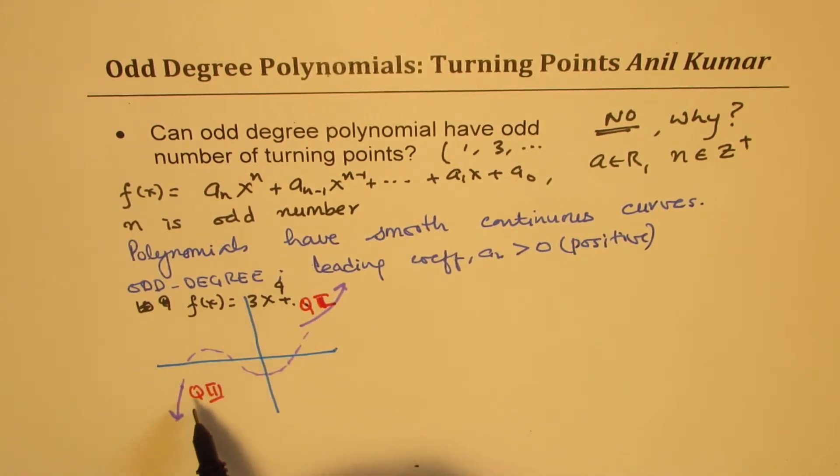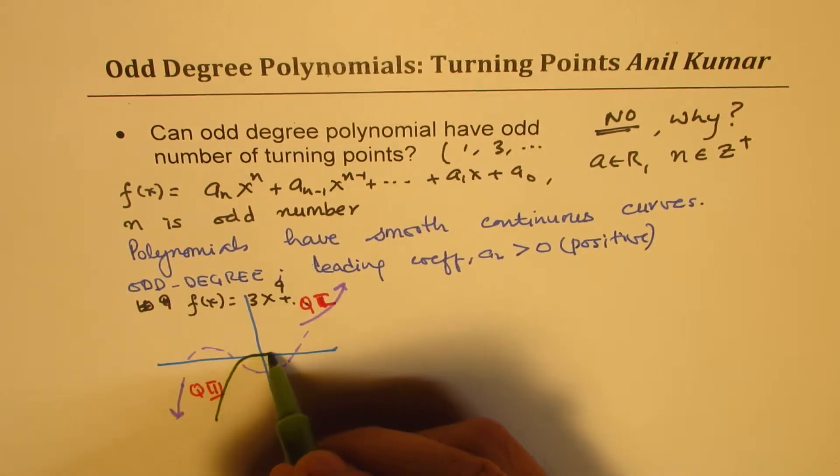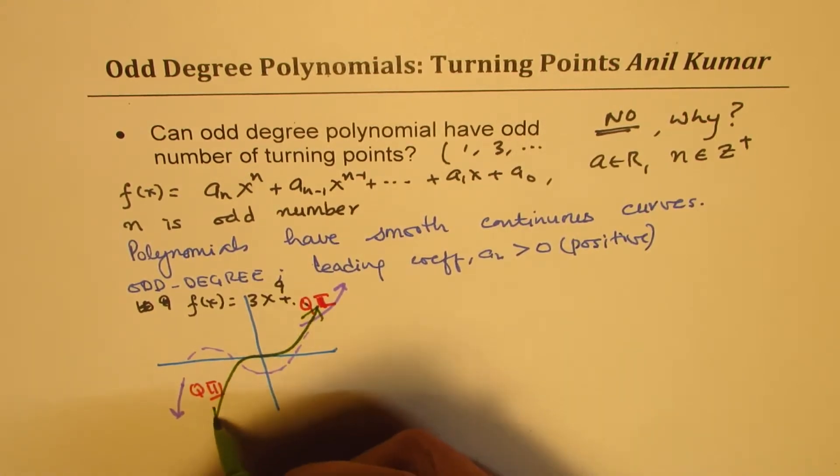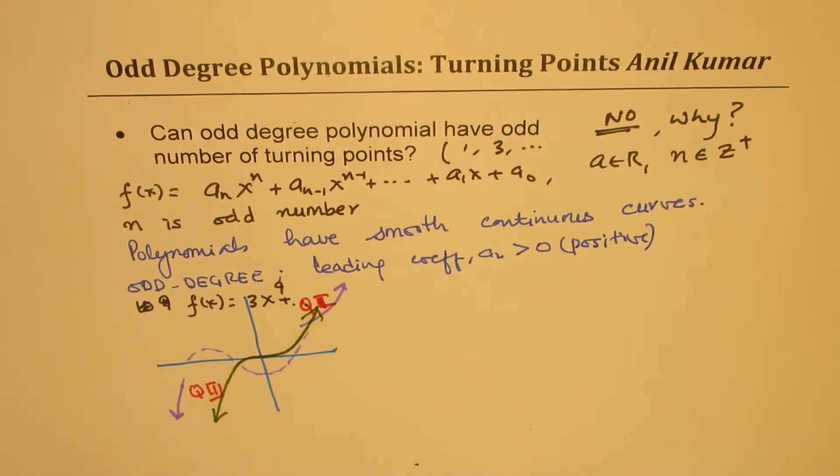So one way is that the graph could go straight. So it could go kind of like this, just slightly turning in there. That is one possible. This is for just x to the power of 9. So there, we do not have any turning points. In this case, the turning point is 0.